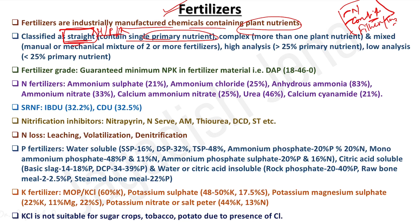A complex fertilizer provides more than one plant nutrient. For example, DAP (di-ammonium phosphate) contains 18% nitrogen and 46% P₂O₅. A mixed fertilizer is a physical mixture of two or more straight fertilizers, or straight with complex fertilizers, or complex with complex fertilizers.